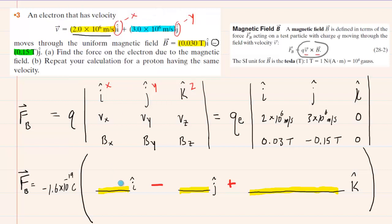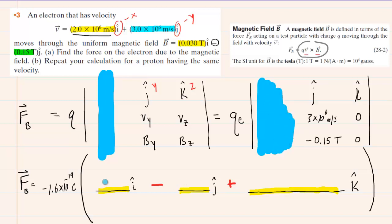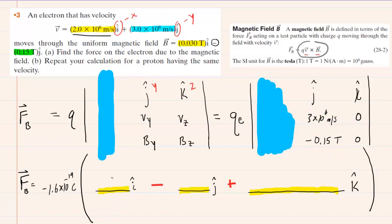To compute the cross product, when doing the i hat value, cover up the i hat column in your setup. What's left is the j hat and k hat columns. You multiply diagonally: 3×10⁶ times 0 is 0, and then 0 times −0.15 is also 0. Between those two results you put a subtraction sign: 0 minus 0 is 0. So in the i hat direction we get 0.